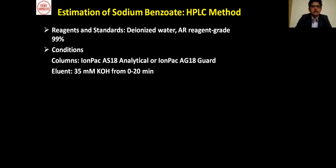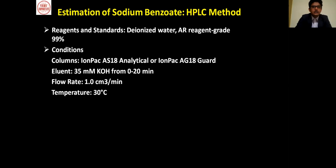The eluent is 35 millimolar KOH from 0 to 20 minutes. Flow rate maintained is 1 cm³ per minute, temperature maintained is 30 degrees, injection volume is 25 microliters, and the runtime is 20 minutes.